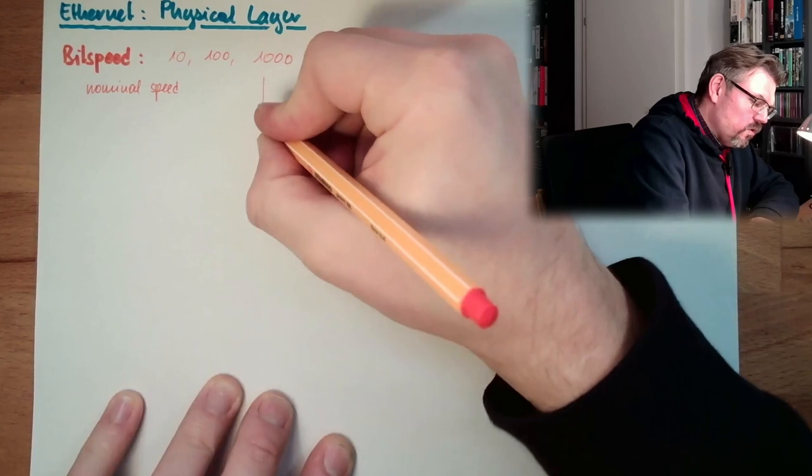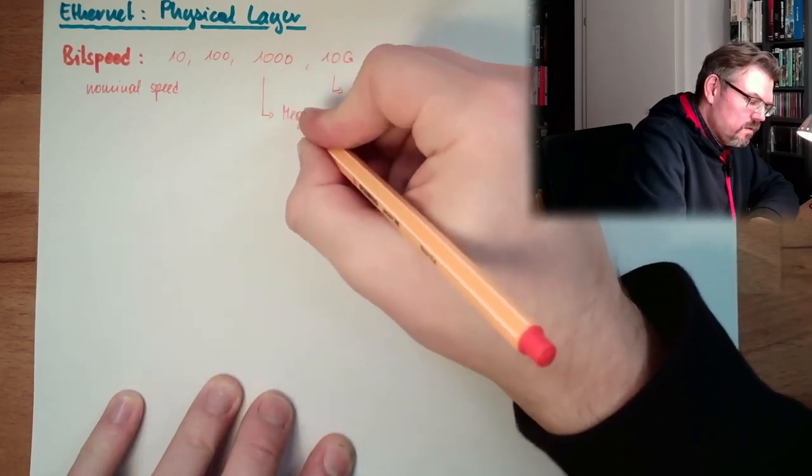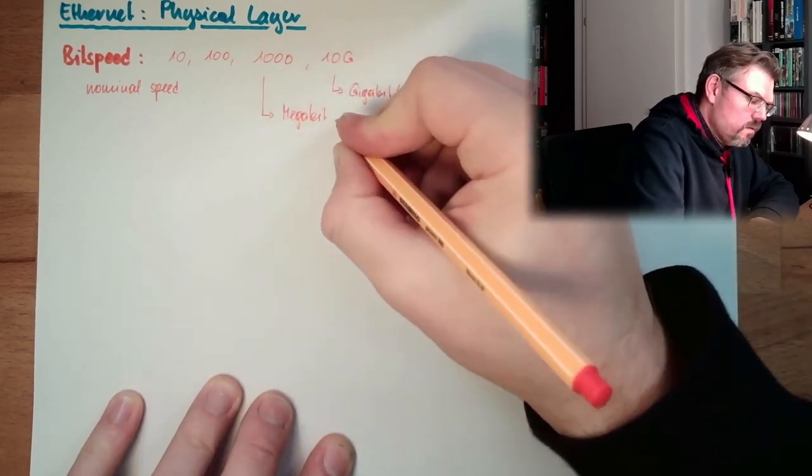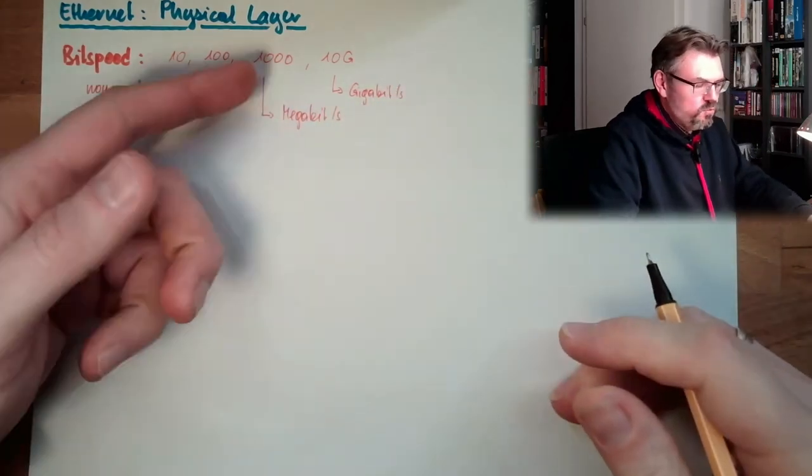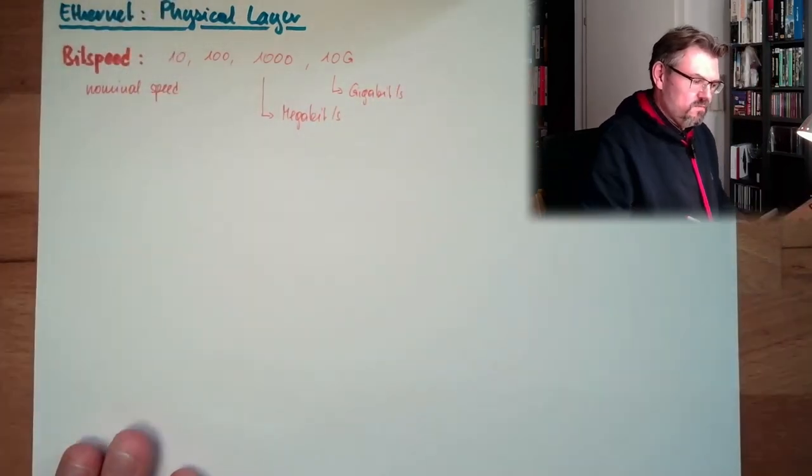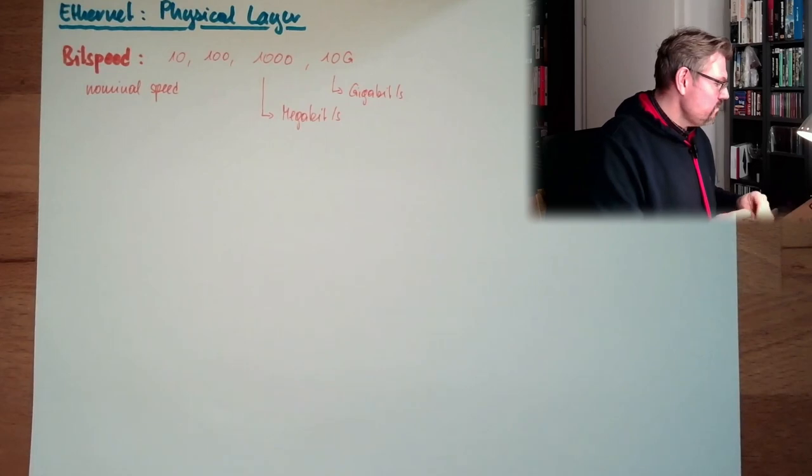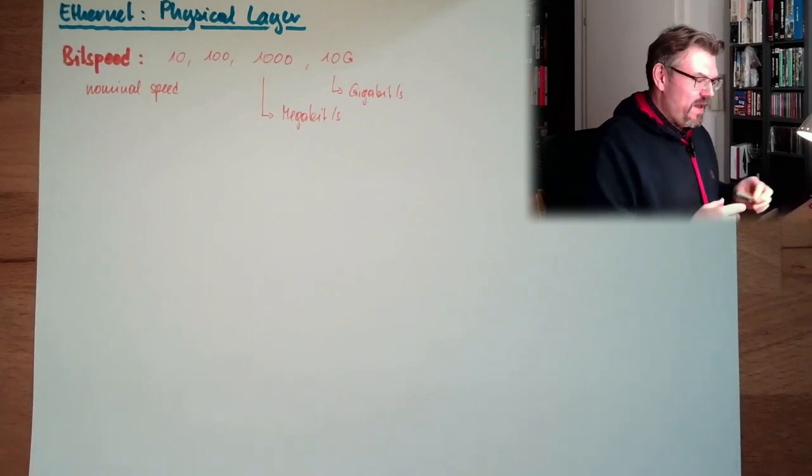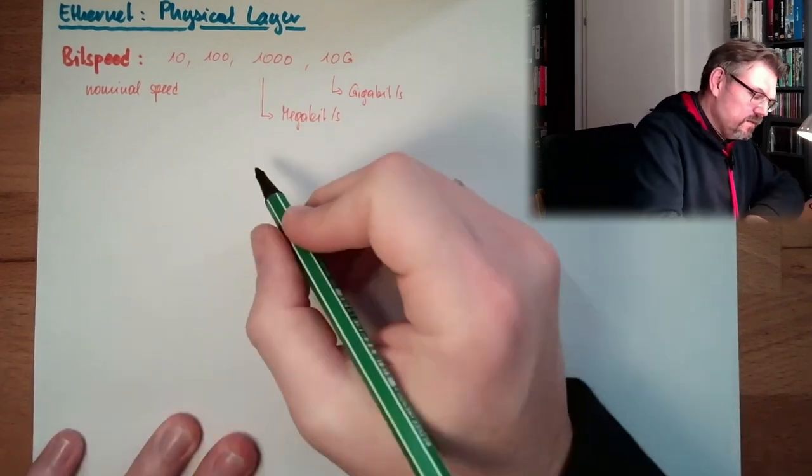And if there is no suffix, then it's megabit per second. So this means 1000 megabit per second. And then there is the band.